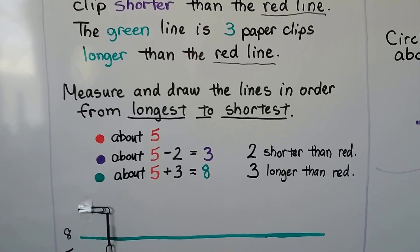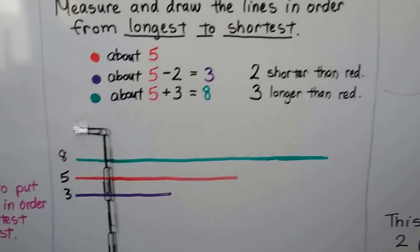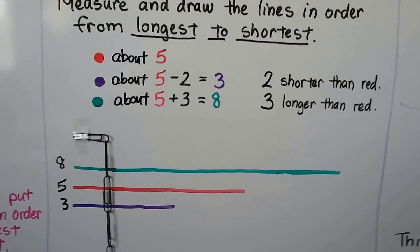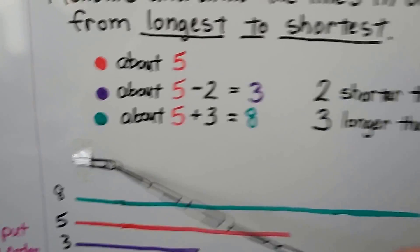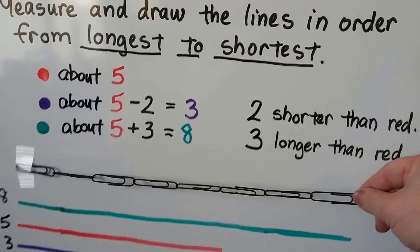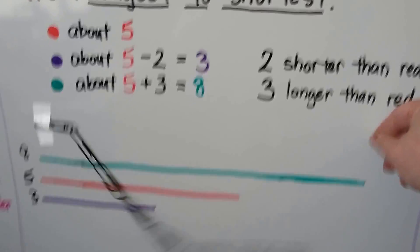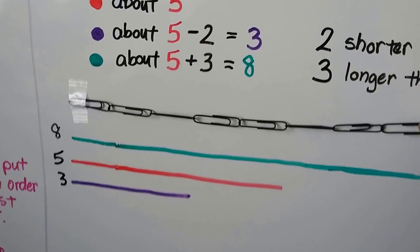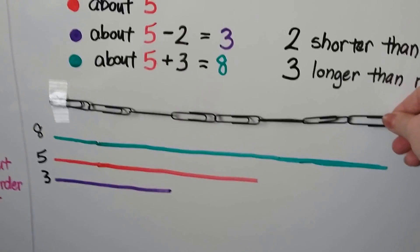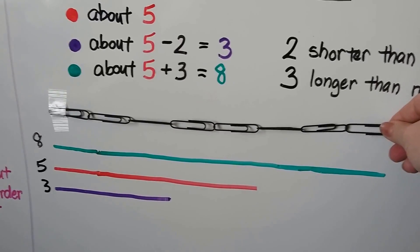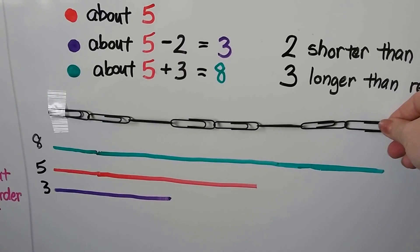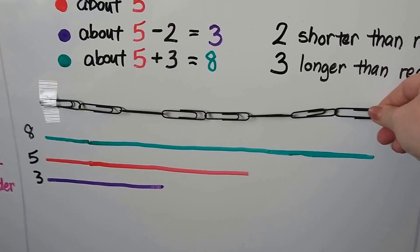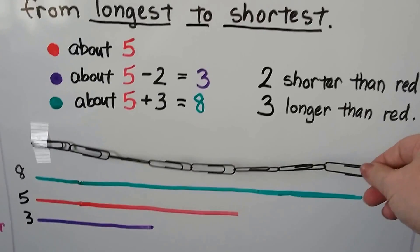We can act it out and put them in order from longest to shortest with our paperclip measuring tool. The longest one would be first — that's the green one at 8. The middle one would be the red one at 5. And the purple one is the shortest at 3. They're in order from longest to shortest.